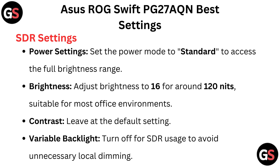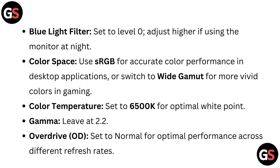Contrast: leave at the default settings. Variable backlight: turn off for SDR usage to avoid unnecessary local dimming. Blue light filter: set to level 0, and adjust higher if using the monitor at night.